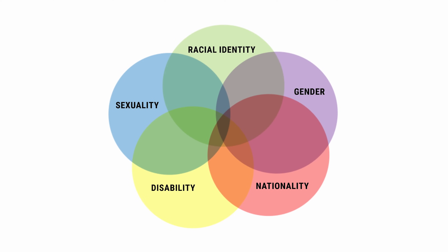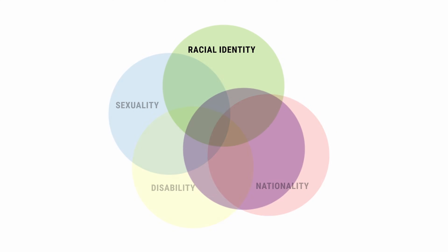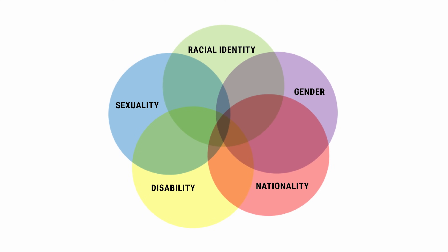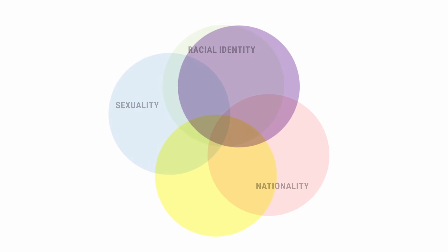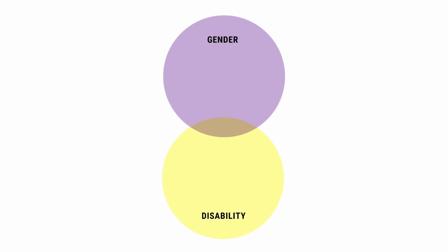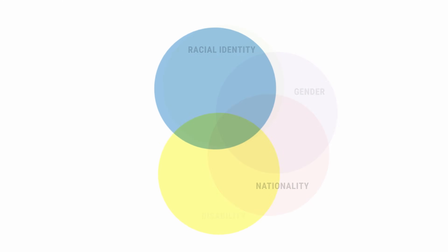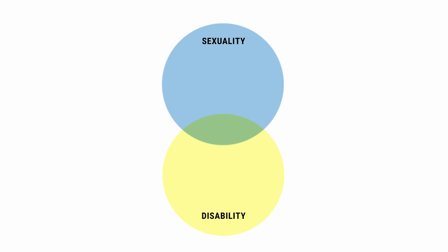For example, if a woman is a woman and is also racialized, those two things cannot be separated. If a woman is a woman and also lives with a disability, those two things cannot be separated. If somebody identifies as queer and also has a disability, those two things cannot be separated.